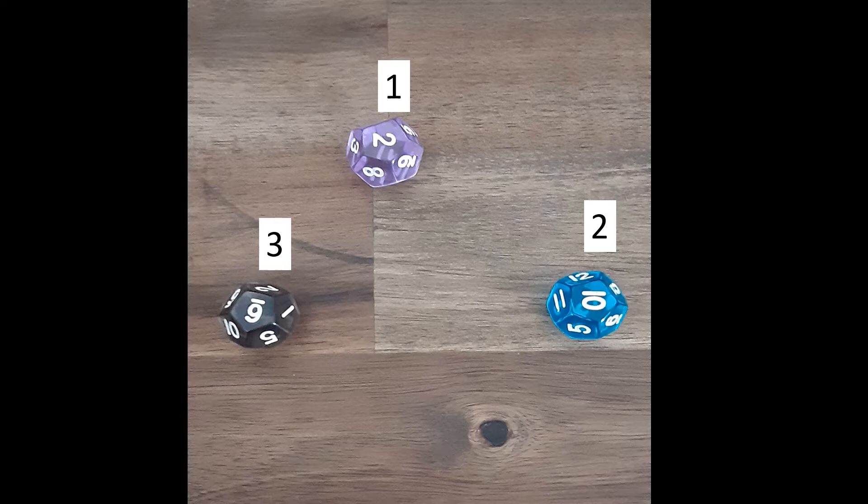If you chose dice number two, it rolled a 10. And the goddess behind 10 is Pisaui, the goddess of endurance.